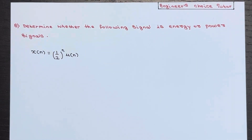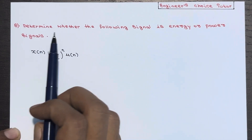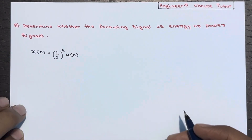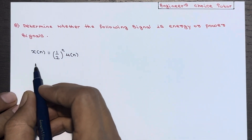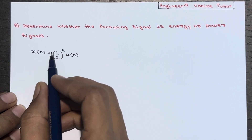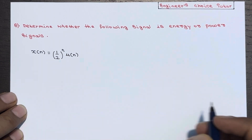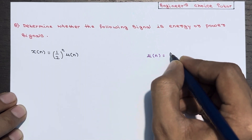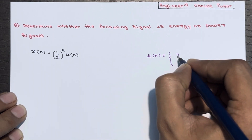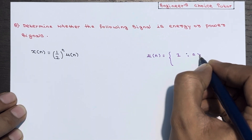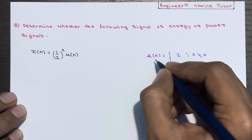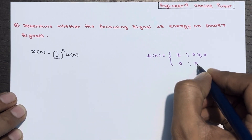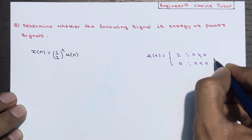Hi everyone, in today's lecture we'll see numericals based on energy or power signals. The question will be: determine whether the following signal is an energy or power signal. The signal is x(n) = (1/2)^n · u(n). You should know about u(n) first — it is a unit step signal equal to 1 when n ≥ 0, and 0 when n < 0.